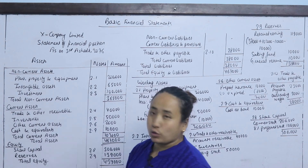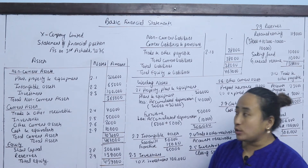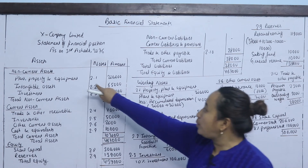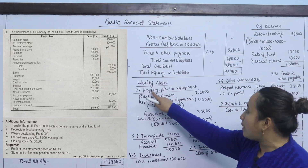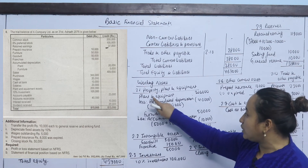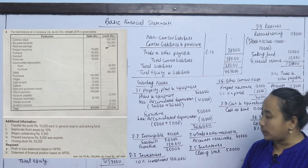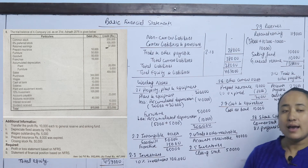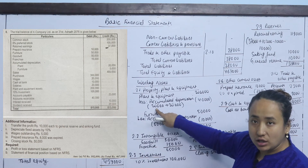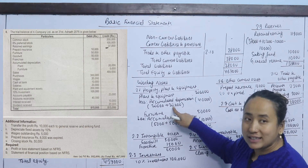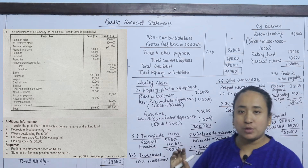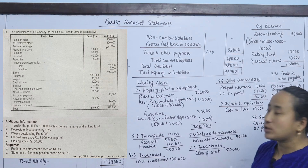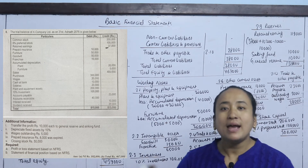Working note 2.1 covers Property, Plant and Equipment. In the previous class, this was called fixed assets in the balance sheet but under NFRS it is called plant, property and equipment. From the trial balance, plant and equipment is 2 lakhs with accumulated depreciation. Furniture is 50,000 and depreciation from trial balance is 5,000. Current year depreciation is also less than 50,000.